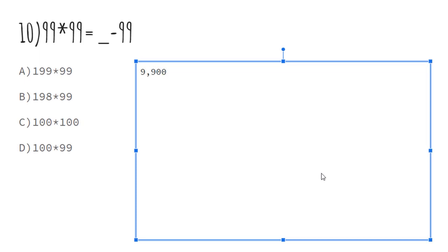And so if we minus that by 99, we would get 9,801. And now 99 times 99 equals 9,801. So your answer would be D.